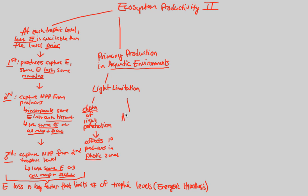In terms of light limitation, about 50% of absorbed light is only available to the first 15 meters of water depth. These first 15 meters are critical — they receive the most energy and thus have the most NPP for each trophic level to work from. This makes light penetration a major limitation within an aquatic environment.